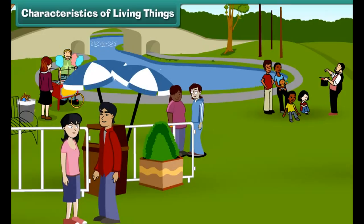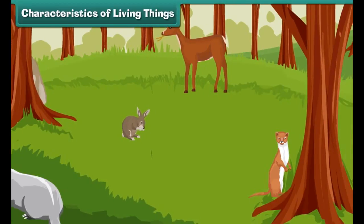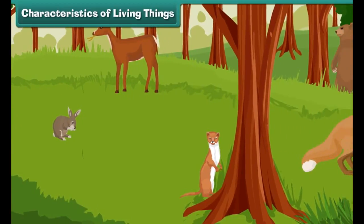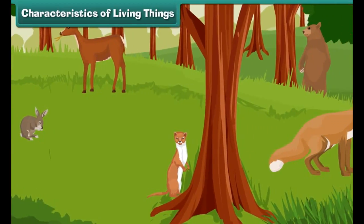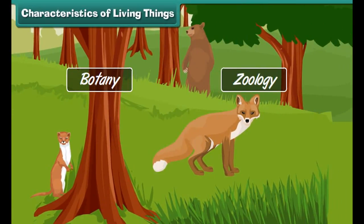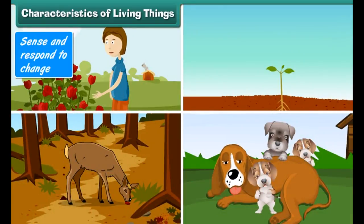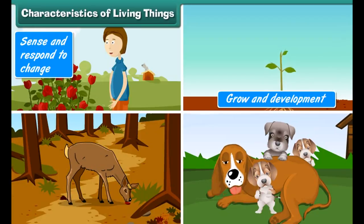Characteristics of living things: things which depict growth, reproduction, ability to sense the environment, and mount a suitable response are called living things. Plants and animals are both living. Therefore, biology deals with the study of both plants — botany — and animals — zoology.